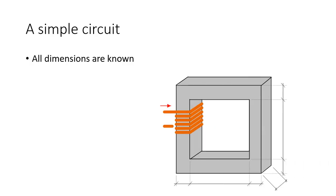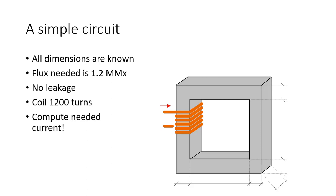All the dimensions will be revealed. We need 1.2 million lines of flux in that core. There is no leakage. Assume that there is no leakage. That means that all the flux is in the iron. There is no flux in the air. The coil has 1,200 turns. What is the necessary current in that coil?